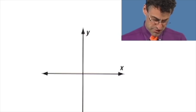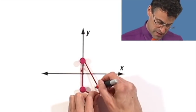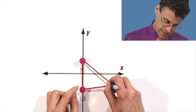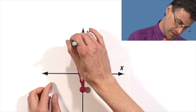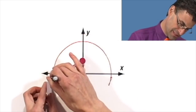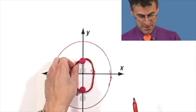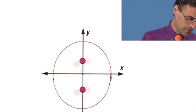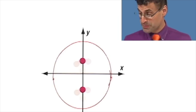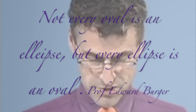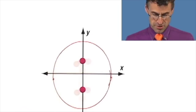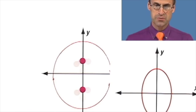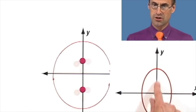The ellipse is a slight generalization where we take two fixed points. You can actually try this with a pin and some string — and look at that, that actually is an example of an ellipse. It's a very special type of oval; not every oval is an ellipse, but every ellipse is an oval. These two points are called the foci.